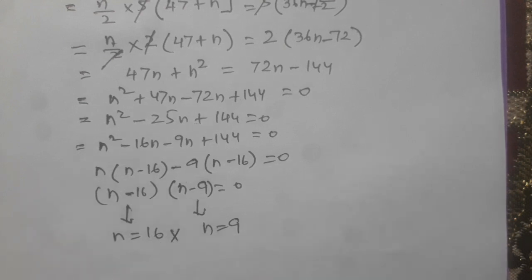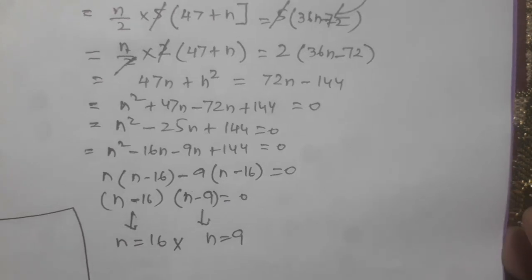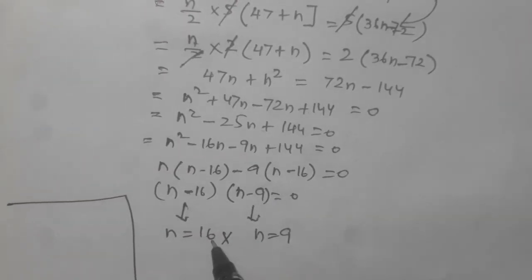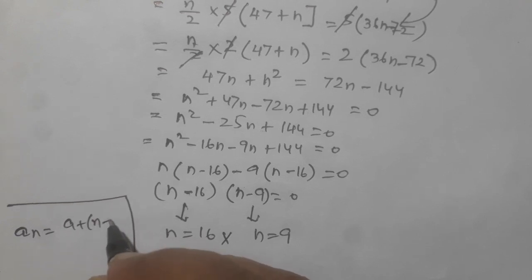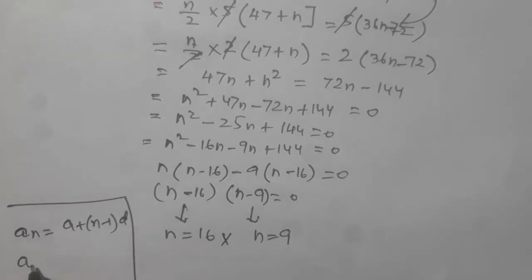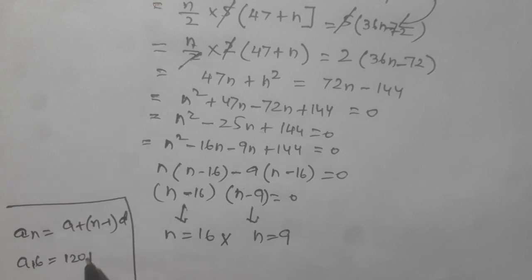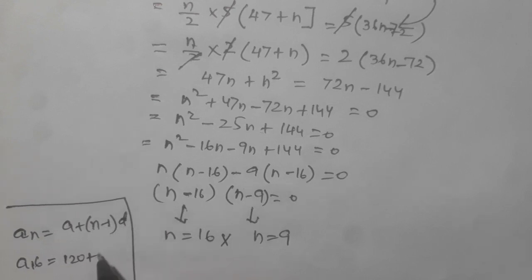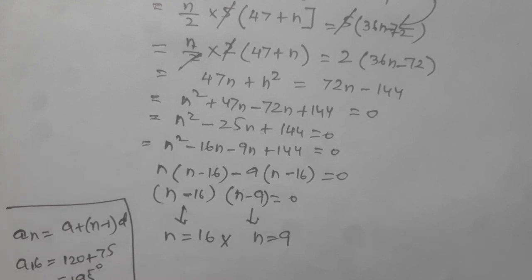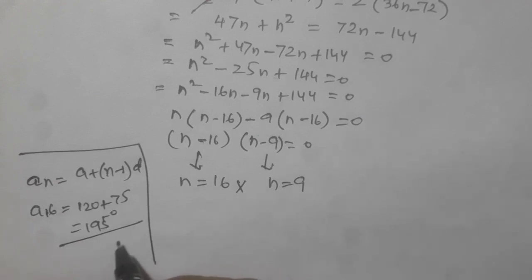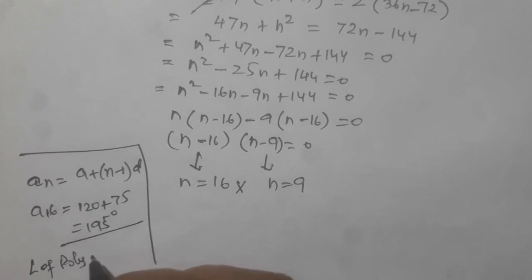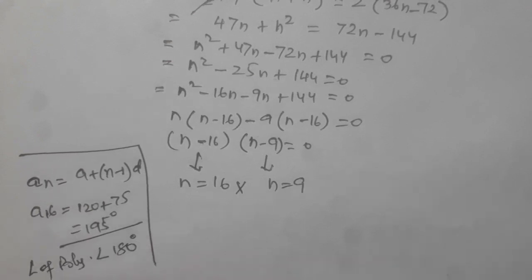But N equals 16 is not possible. Why? Suppose N equals 16, so AN equals A plus N minus 1 into D. A16 equals 120 plus 16 minus 1, 15, and D equals 5. 15 multiplied by 5 is 75, so it will be 195 degrees. But the angle of a polygon cannot be greater than 180 degrees. It should be less than 180 degrees. So it is not possible.